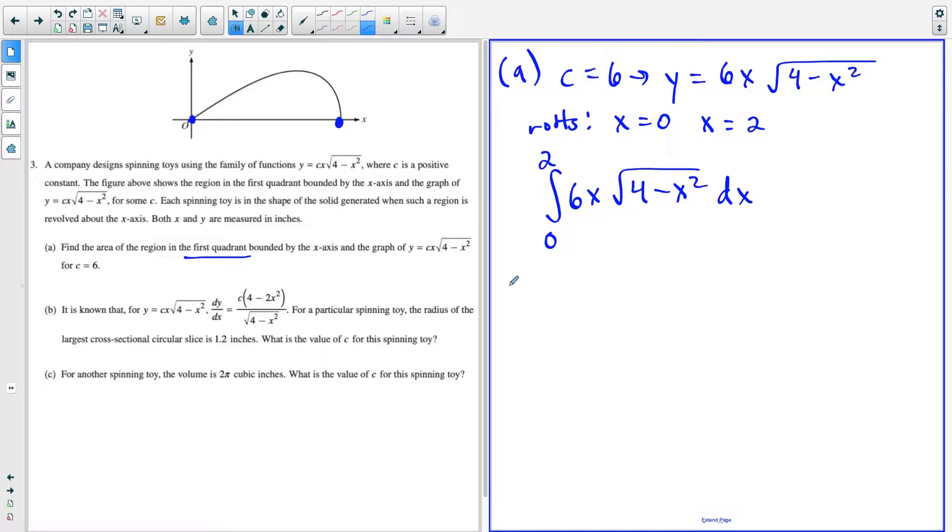So from here, we could do our u-substitution. We could let u equal four minus x squared, which means that du is going to be equal to minus two x dx. And if we solve for dx, dx is equal to du over negative two x. And another step here that we could go with is we could find new limits of integration. So the way we find our new limits of integration is we plug the old x limits into our definition of u.